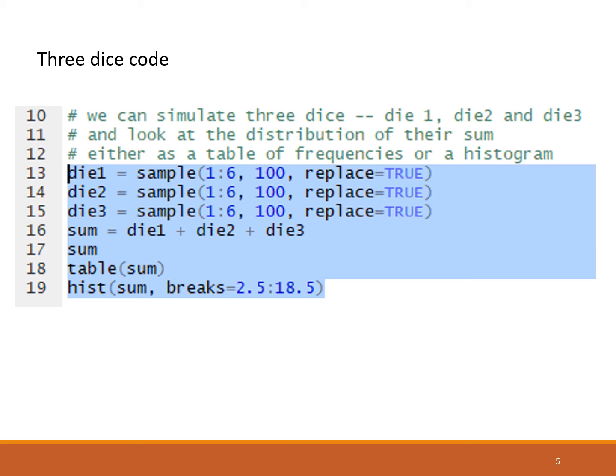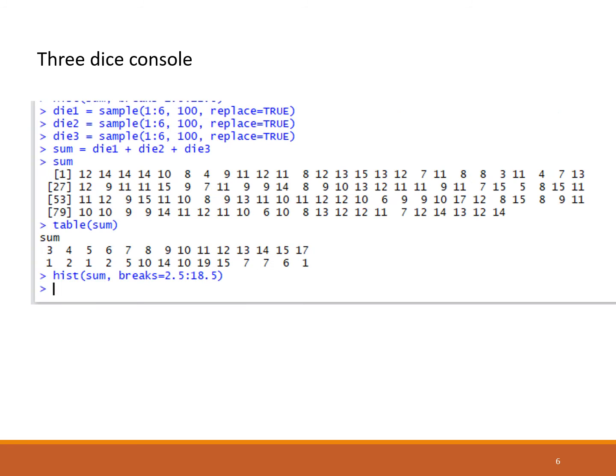Here we're seeing some of those results in the console. Sum was a vector of length 100 and was the sum of 3 dice, so we're expecting possible values between 3 and 18. When we tabled it, we were counting the frequencies. We rolled a 3 one time, a 4 two times, a 5 one time, a 6 two times, etc. At the other end, we never happened to roll an 18. The histogram will be over in the plot region.